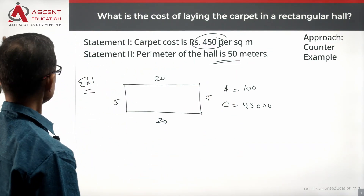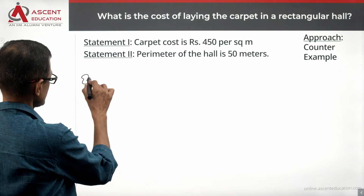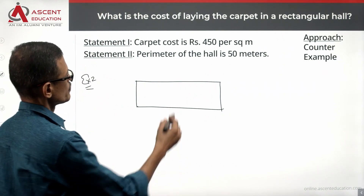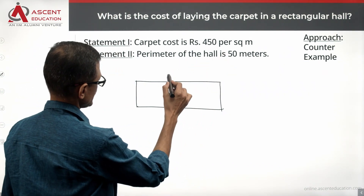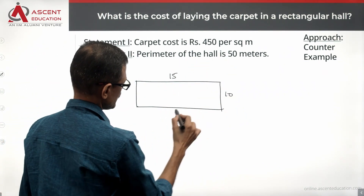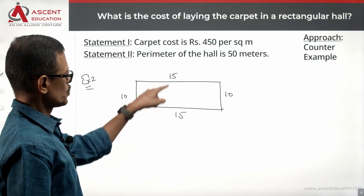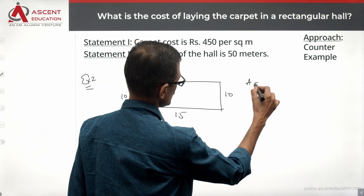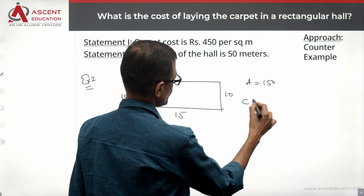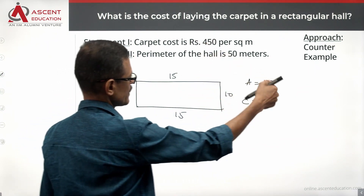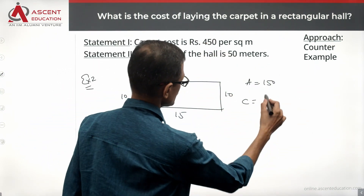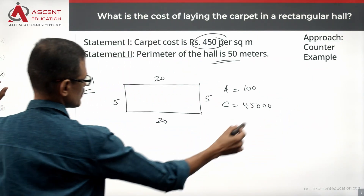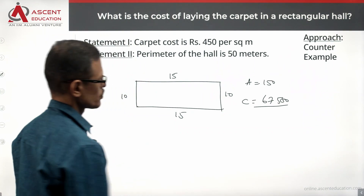Now consider another rectangle also with perimeter 50: length = 15 and width = 10. Then 2×15 + 2×10 = 30 + 20 = 50, which also works. The area is 15×10 = 150 square meters. The cost would be 450 × 150 = 67,500 rupees. In the first example the cost was 45,000 rupees; in this example it is 67,500 rupees.